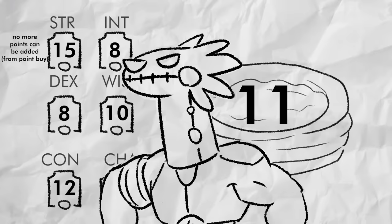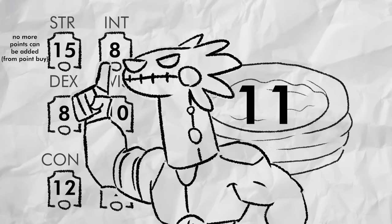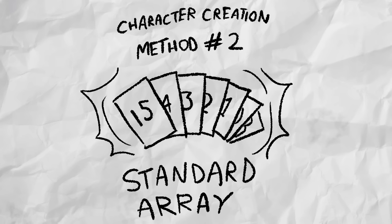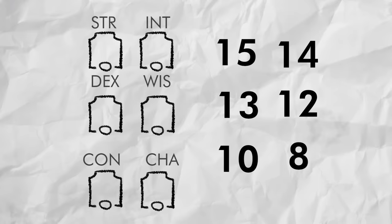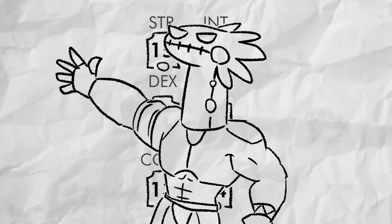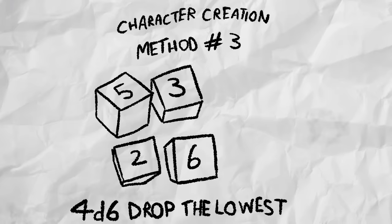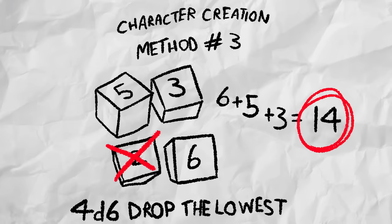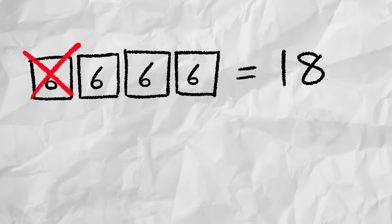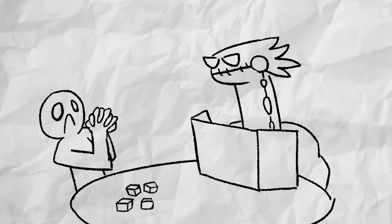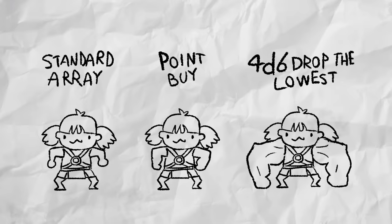If you hate math, that's too bad because there's gonna be loads of it later, but if you want slightly less of it, there's also standard array, which gives you the numbers 15, 14, 13, 12, 10, and 8 to arrange on any of your scores. But if that's still too much choice and you wanna put your character into the grubby hands of RNG Jesus, there's the most widely known method, which is rolling 4d6 and dropping the lowest number. This can get you scores anywhere from a whopping 18 to a poopoo dookie 3, but often results in overall chonkier stats.